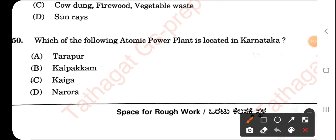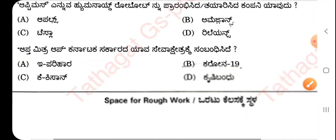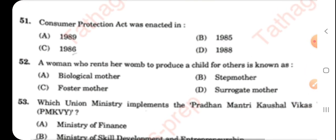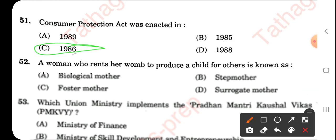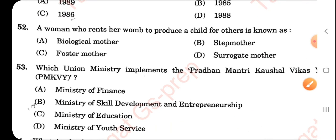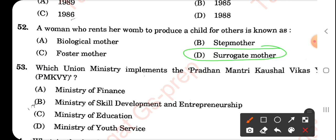The atmospheric layer closest to the ground is the troposphere. Agrostology is the study of grasses. Anemology studies the movement of wind. Moving to the next question: which atomic power plant is located in Karnataka? This is Kaiga — and notably this same question is repeated later in this paper itself.